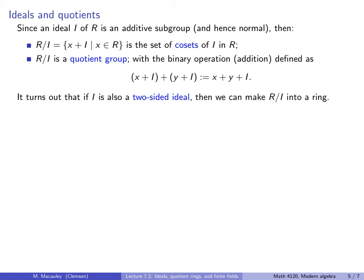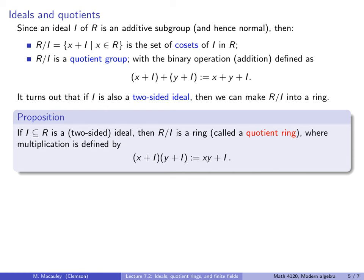It turns out that if I is not just any ideal but a two-sided ideal, then we can make this set of cosets into a ring. We already have the set of cosets and addition; to make it into a ring, we just have to show we have multiplication. If I is a two-sided ideal of the ring R, then R mod I is a ring called a quotient ring, and multiplication is defined as: (x + I)·(y + I) = xy + I.